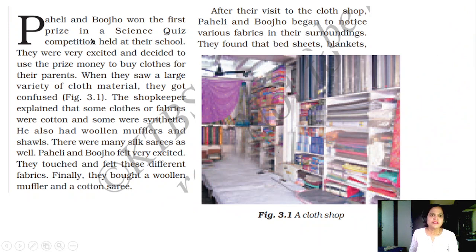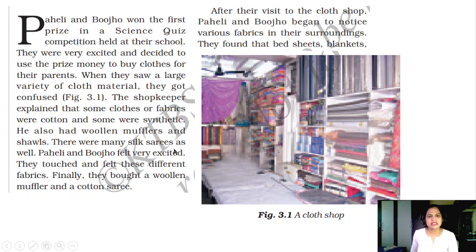Paheli and Gujo won the first prize in the science quiz competition held at their school. They were very excited and decided to use the prize money to buy clothes for their parents. When they saw a large variety of cloth material, they got confused. The shopkeeper explained that some fabrics were cotton and some were synthetic. He also had wool mufflers and shawls, and there were many silk sarees as well. Finally, they bought a wool muffler and a cotton sari.